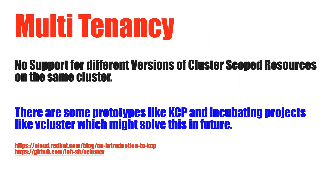In Kubernetes, most custom resource definitions are cluster-scoped. So if you want to install two different versions of the same cluster-scoped resource — say two different versions of Istio or any other CRD — that is not possible today. All these cluster-scoped resources and CRDs are stored in Kubernetes etcd, its object storage, and only one version can be served at a time. This is a classic problem, though most people work around it by reaching consensus on a single version.